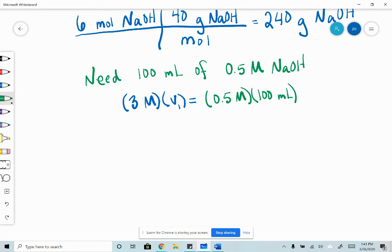So that gives us 3 times the volume that we want to dilute equals 50, and our volume then is going to be about 16.7 milliliters.